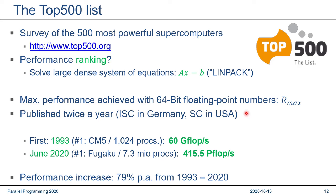To put things in perspective: in the first list published in 1993, number one was the Connection Machine CM5 with 1024 processors — at that time, one processor equaled one core equaled one chip equaled one socket — with an Rmax of 60 gigaflops, meaning 60 billion floating-point operations per second. In the current list from June 2020, number one is the Japanese Fugaku system made by Fujitsu, with 7.3 million cores and an Rmax of 415 petaflops. If you do the math, that's a performance increase of 79% per year from 1993 to 2020.